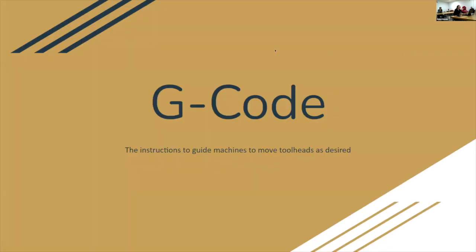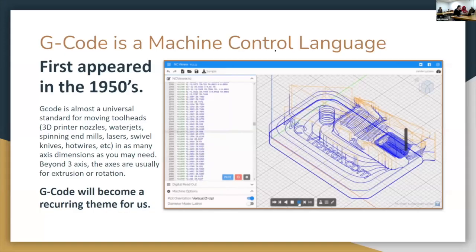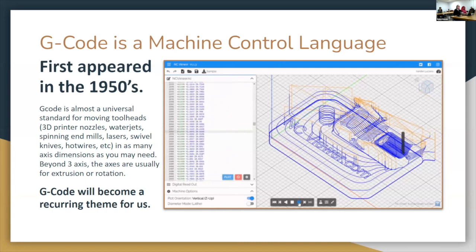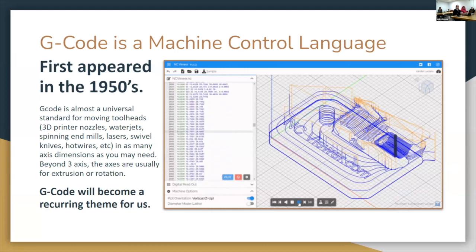GCode is a generalized machine control language. Anything that runs like a CNC — where it can move in three dimensions — uses GCode. That includes the Gerber, the Shopbot, the Tormach, 3D printers, the embroidery CNC machine, the hot wire CNC, and more. A proper machinist will know how to read and write it, but it started in the 1950s, and luckily you don't need to write or read any of it by hand as a maker.